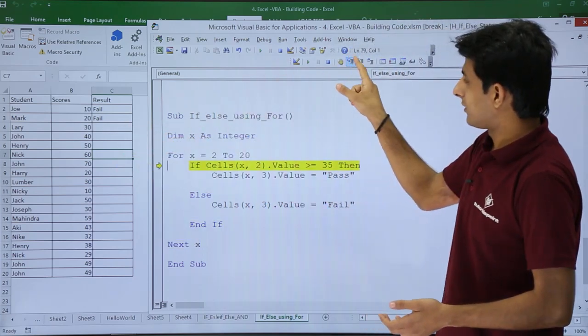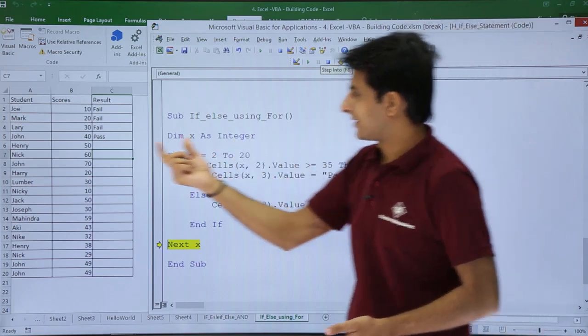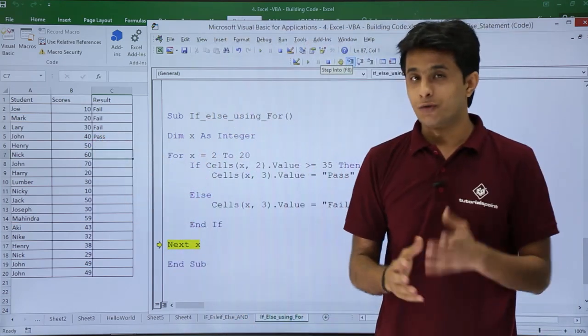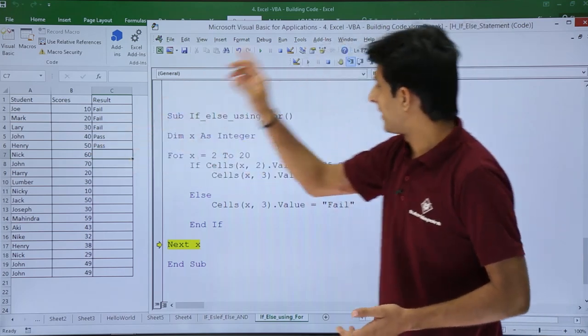Second one is also fail, third one is also fail. Let us see the fourth one. Yes, fourth one is given as pass, so fourth one is working pass. Fifth one is also working pass.